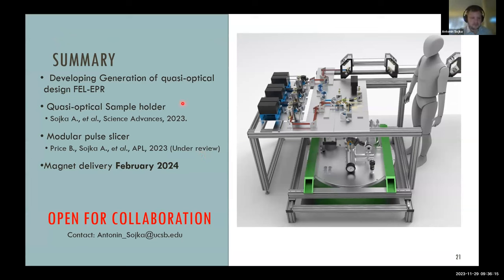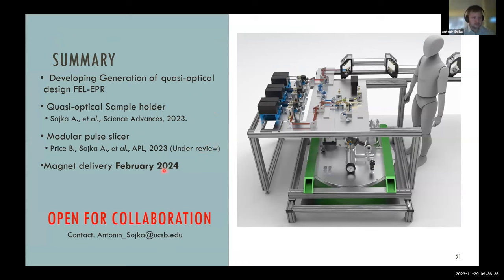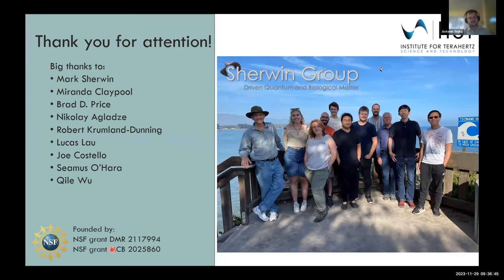In summary: I told you about the development of a new generation FEL EPR spectrometer and the quasi-optical sample holder, recently published in Science Advances. Our new pulse slicer is currently under review. We expect delivery of our new magnet in February 2024 and are open for collaboration — if you have something interesting to measure, we'd be happy to hear from you.